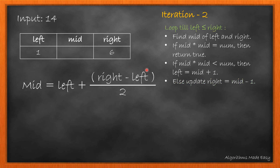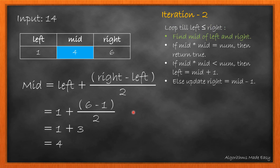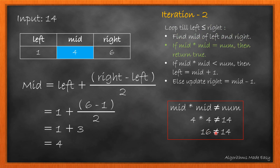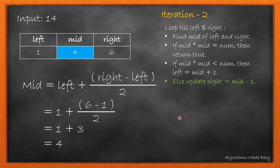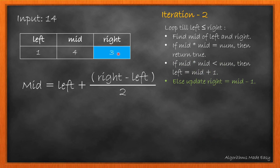We will check the looping condition. Since it is true, we move ahead with the second iteration. We will calculate the mid. We will check if its square is equal to num. As it is not, we move to the next step. Also, the square is not less than num, so we move to the else part and update right to 3.